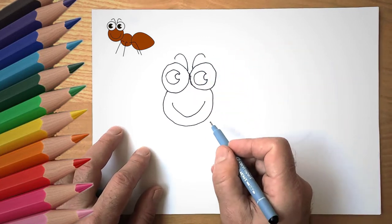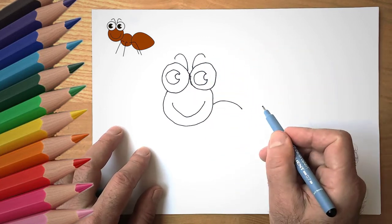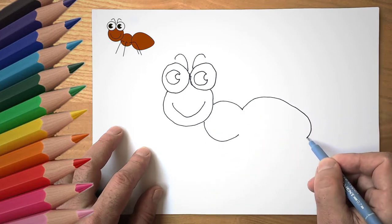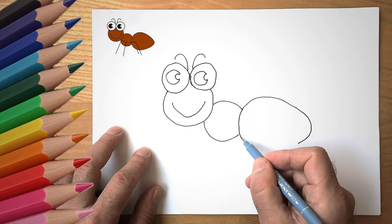Now draw an oval. It will be the head of the ant. We draw our mouth, draw two horns. These are small horns on the head of an ant.